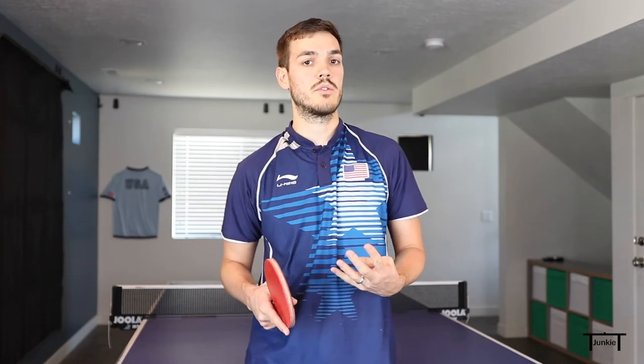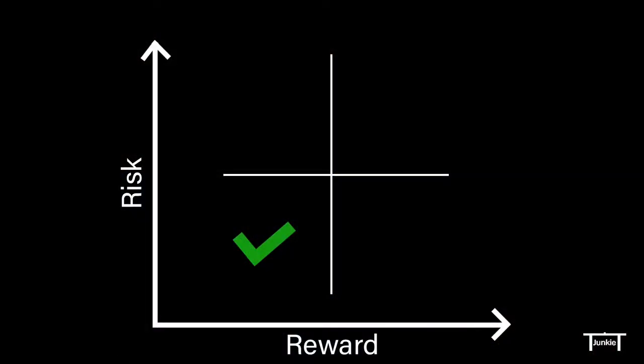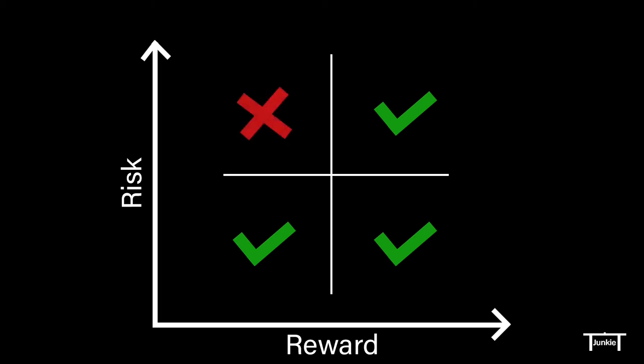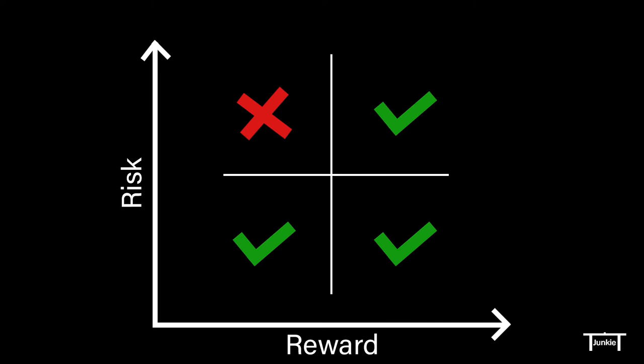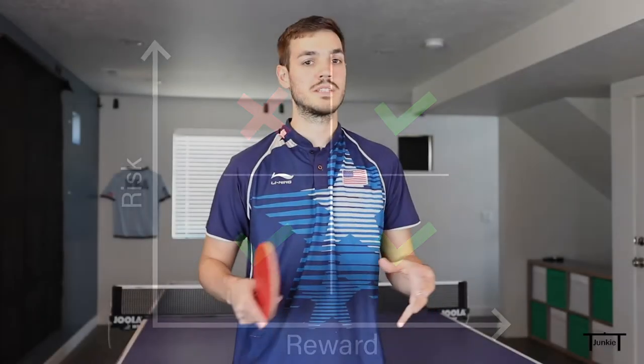I like to categorize my serves into four different categories. There's the low-risk, low-reward serves. There are the high-risk, high-reward serves. There are low-risk, high-reward serves — that's really what you're aiming for most of the time. And then there's the high-risk, low-reward serves, and those are really the serves you just want to stay away from pretty much at all times.